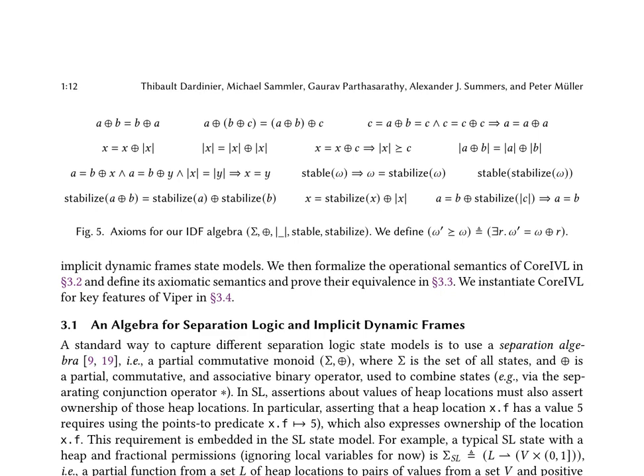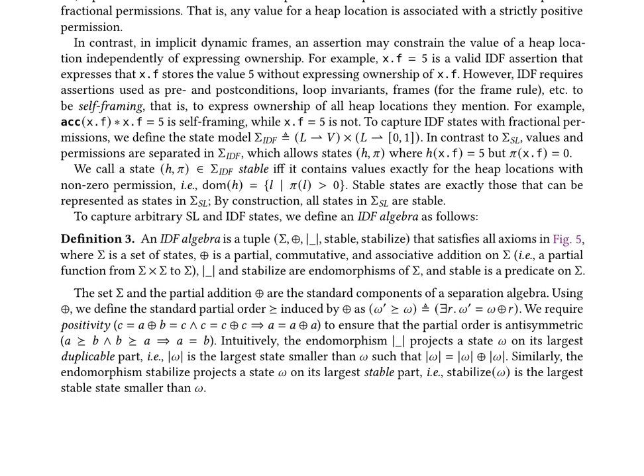The paper first defines an IDF algebra that captures both separation logic and implicit dynamic frame state models. The IDF algebra is a tuple (sigma, ⊕, _ stable, stabilize) that satisfies certain axioms, including positivity and antisymmetry of the partial order induced by ⊕. It then formalizes the operational semantics of core IVL in Section 3.2, defines its axiomatic semantics and proves their equivalence in Section 3.3, and instantiates core IVL for key features of Viper in Section 3.4. The IDF algebra captures arbitrary SL in IDF states, with sigma being the set of states, ⊕ being a partial commutative and associative addition on sigma, and _ stable and stabilize being endomorphisms of sigma.